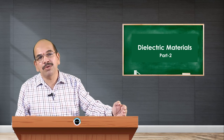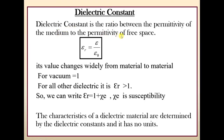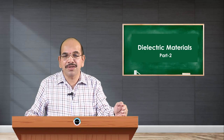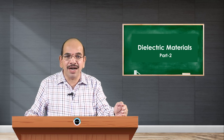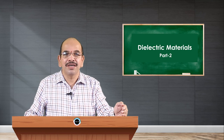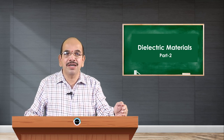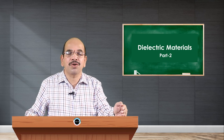Another parameter for dielectric materials is the dielectric constant, which is the ratio between the permittivity of the medium and the permittivity of free space. It is a comparative term — epsilon over epsilon-naught — also called relative permittivity. Its value changes widely from material to material. In vacuum, the dielectric constant is one; for all other dielectric media it is greater than one. The characteristics of a dielectric material are determined by the dielectric constant, and it has no units as it is a ratio.